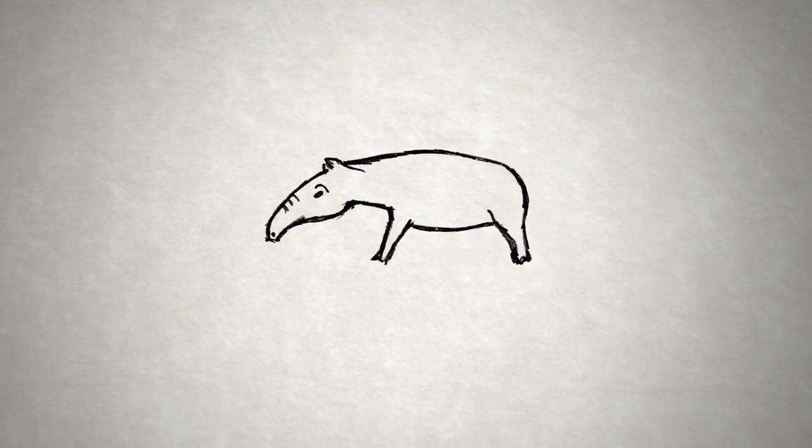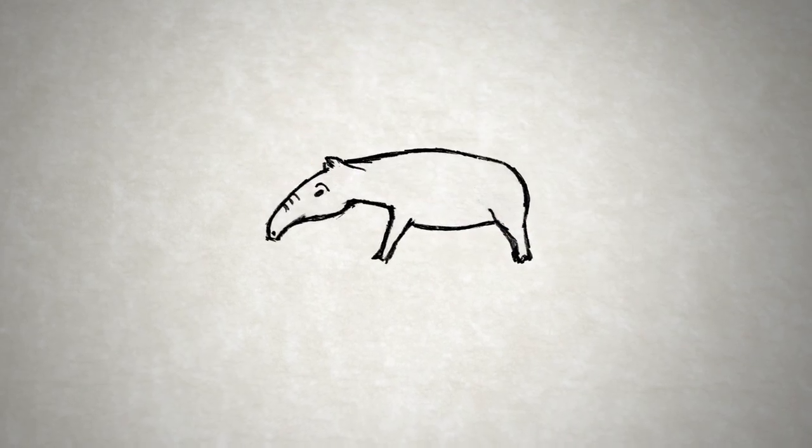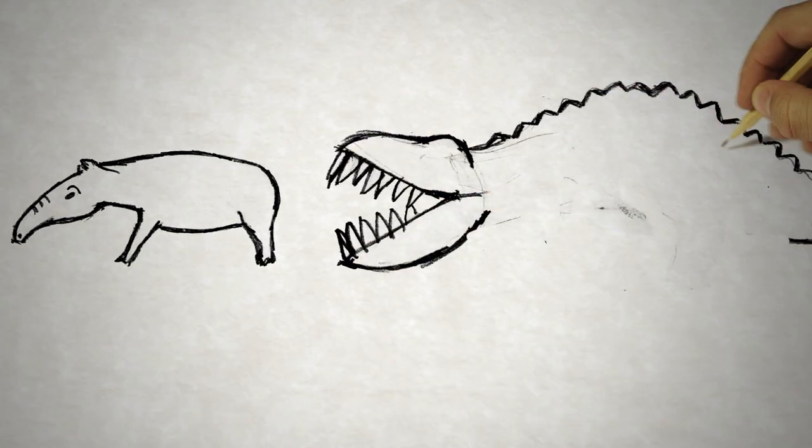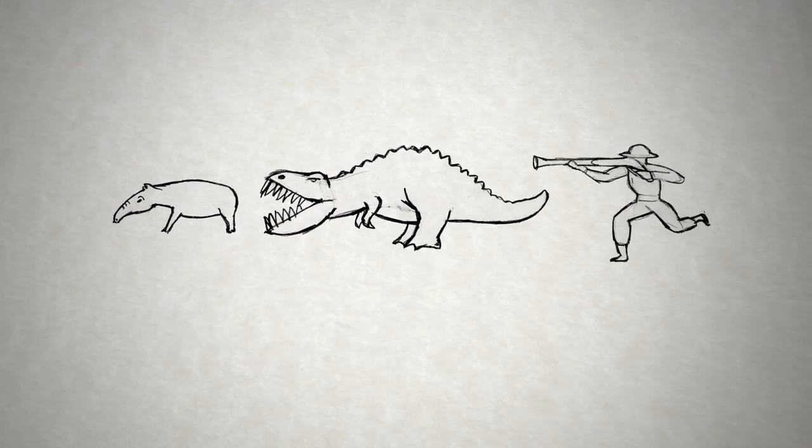The tapir is a primitive animal that has remained unchanged for millions of years. Evolution proves that basic things always win.